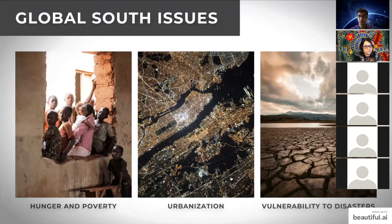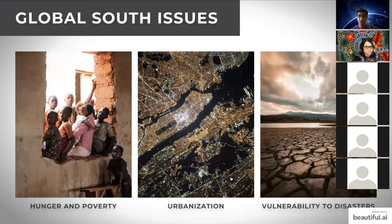This presentation mainly covers issues in developed countries with a US focus, but developing and underdeveloped countries face very different challenges. The three main global south issues are hunger and poverty, rapid urbanization causing shifts from rural to urban labor and consumption patterns, and vulnerability to disasters. Poor countries are least resilient to droughts, water scarcity, and rising temperatures, meaning increased crop failures in many cases.